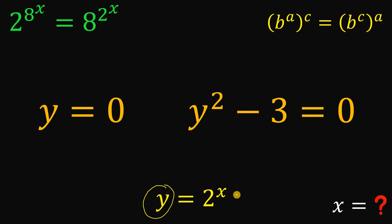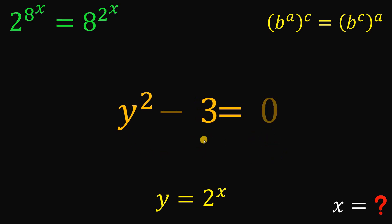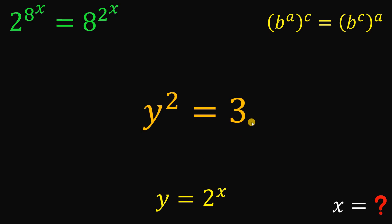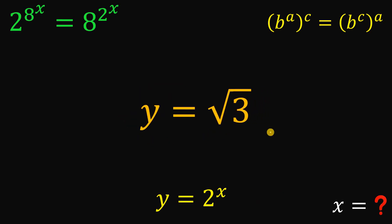Now, since y equals 2 raised to the power of x, and we have an exponential equation, take note this is always greater than 0. So y cannot be equal to 0 — this case is not possible. So what we're going to do is use the second case, where y squared minus 3 equals 0. To solve for y, let's add 3 on both sides. We get y squared equals 3. Now get the square root on both sides, and since y is always greater than 0, we want the positive value — so y equals the positive square root of 3.